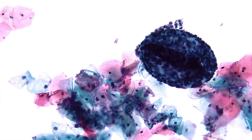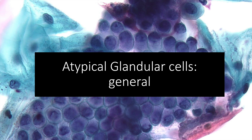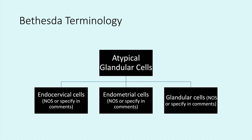Now we'll move on to atypical glandular cells in general. The Bethesda terminology is broken down into three groups: atypical endocervical cells, atypical endometrial cells, and atypical glandular cells in general. These can be further qualified as NOS or with specifying comments, which we'll cover in a moment.